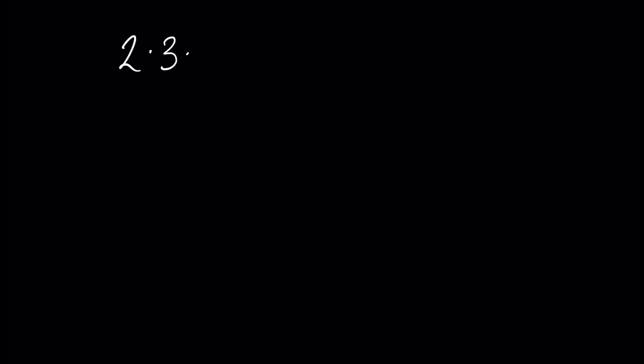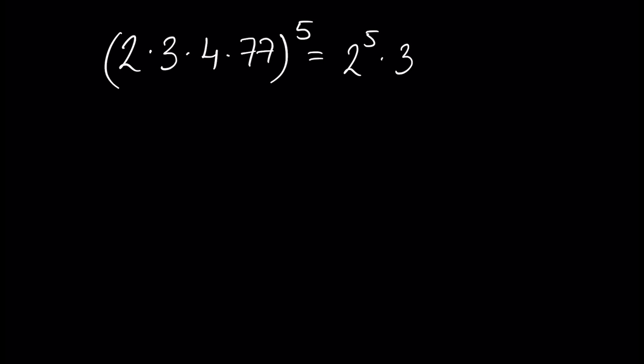The first law of exponents states that the power of a product of factors is equal to the product of powers of each separate factor. For example, assume we have 2 times 3 times 4 times 77, all raised to the power of 5. This equals 2 to the power of 5, times 3 to the power of 5, times 4 to the power of 5, times 77 to the power of 5.